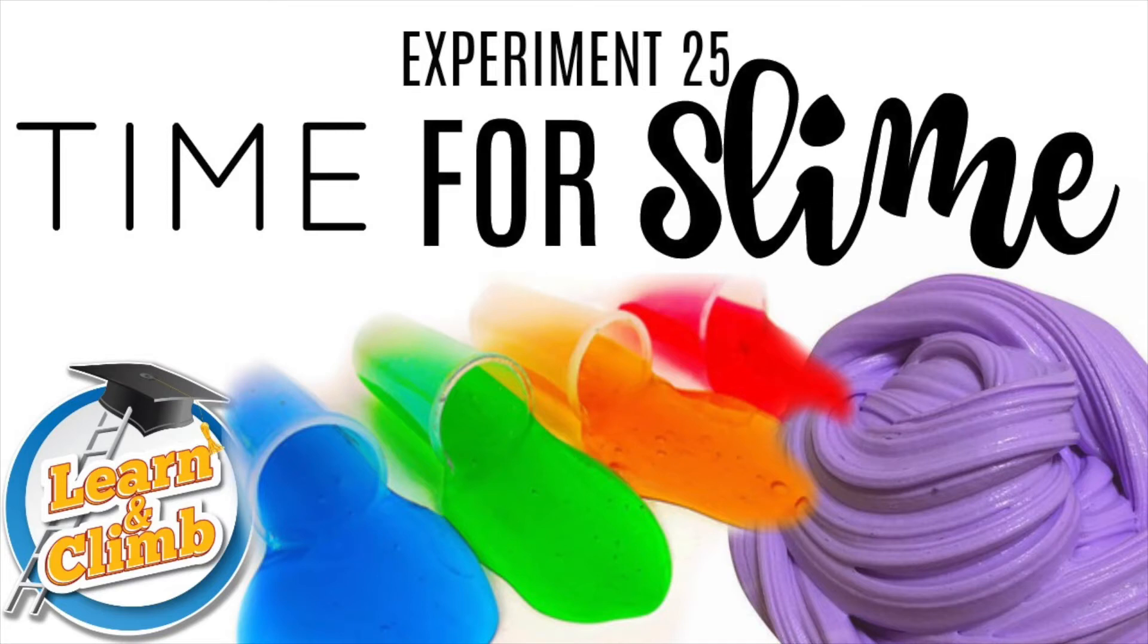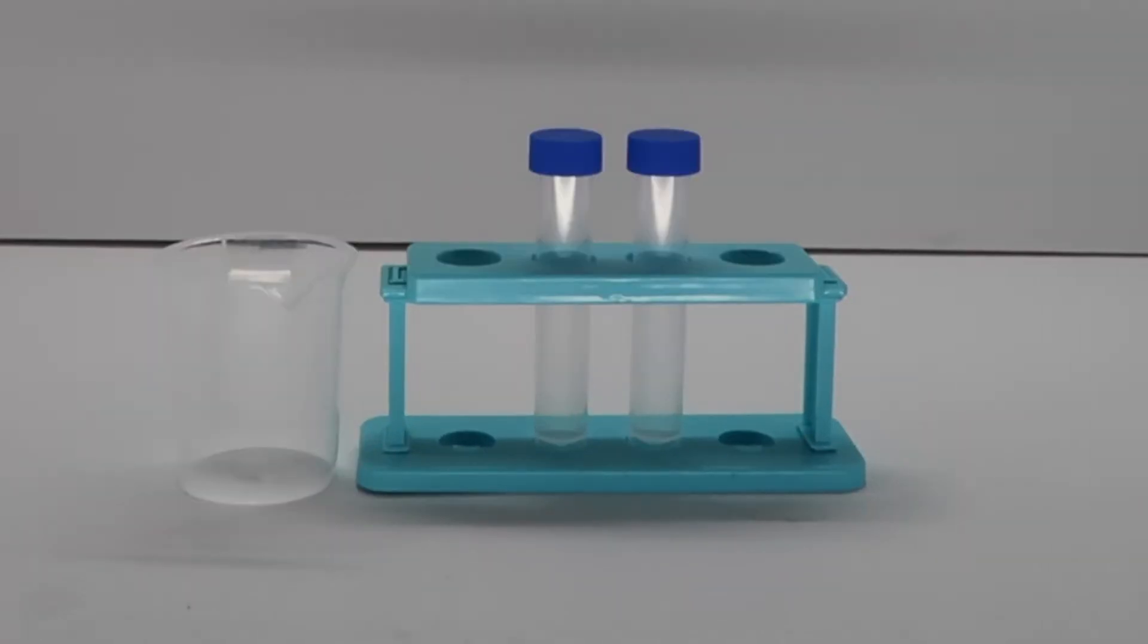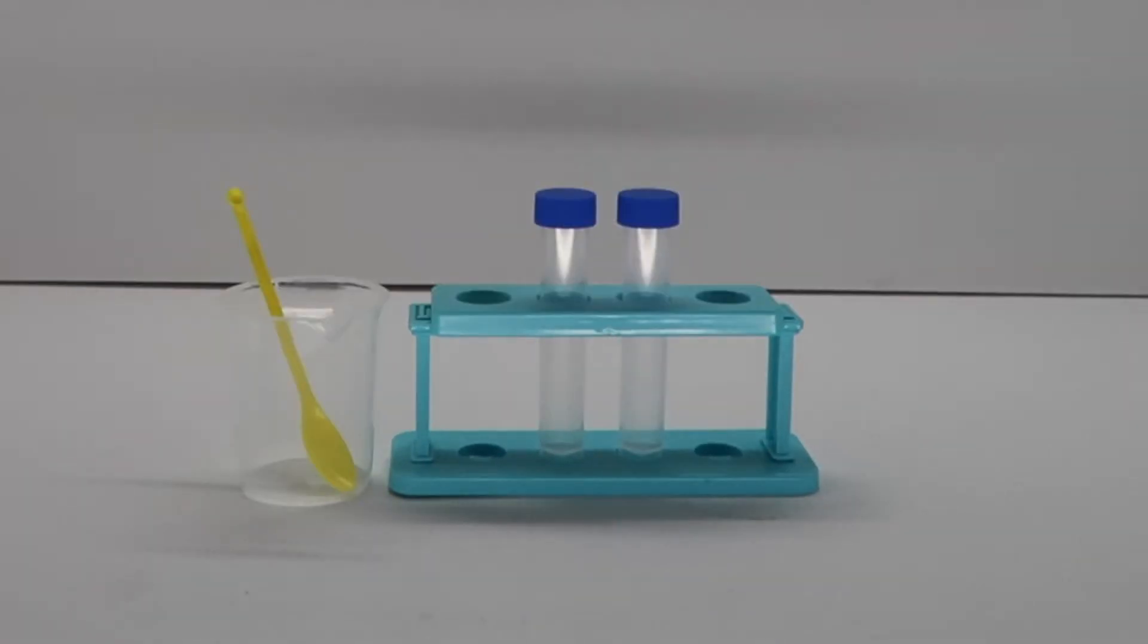Experiment 25. Time for slime! Tools needed from Kit: 2 small test tubes, 1 beaker, the yellow measuring spoon.